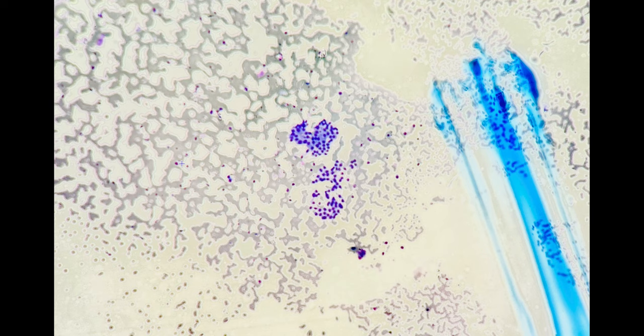So the adequacy criteria for a thyroid specimen is you need six or more groups of 10 or more follicular cells. So this is just one representative area, but we had more than six groups of 10 or more follicular cells. So we deemed it adequate. And follicular cells, the size are generally the size of a red blood cell. So you can use that as a yardstick.